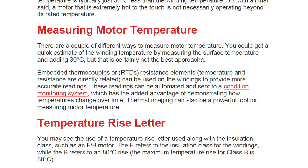There are a couple of ways to measure motor temperature. You could get a quick estimate of winding temperature by measuring the surface temperature and adding 30°C, but that is certainly not the best approach. Embedded thermocouples — RTDs, where resistance and temperature are directly related — can be used in the winding to provide a more accurate reading. These readings can be automated and sent to a condition monitoring system.